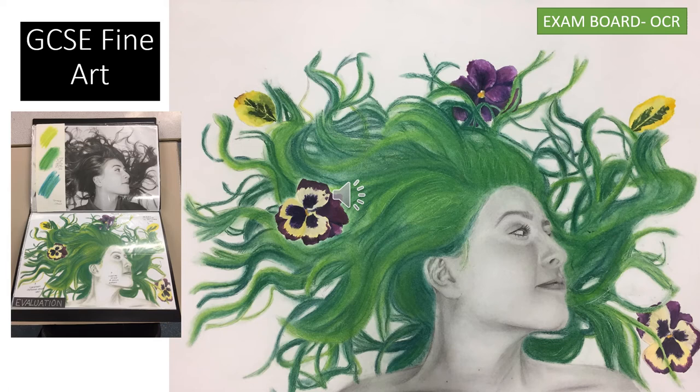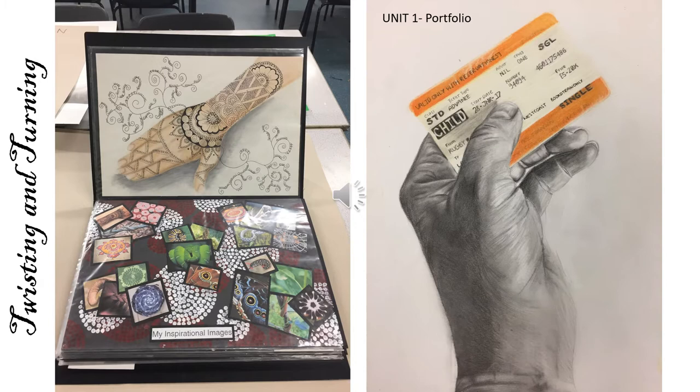This all builds up towards creating a final piece at the end of the project. Over the next couple of slides you will see some examples of the portfolios produced for the twisting and turning theme. Students are able to select which artists they look at, which cultures they look at, and the objects and themes they want to focus on within the twisting and turning project. All the folders are very individual and students have full creative control over what it is they produce.